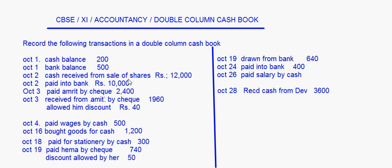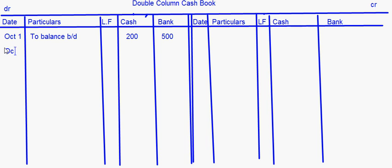October 2nd: cash received from sale of shares rupees 12,000. Whatever increases your cash balance is debited, whatever decreases it is credited. Cash received from sale of shares — we use an account called investment account. Since we are receiving cash, it comes in the cash column as 12,000 rupees.